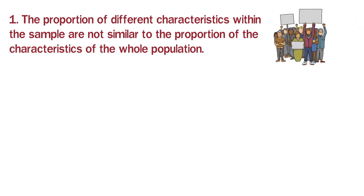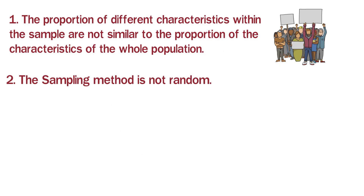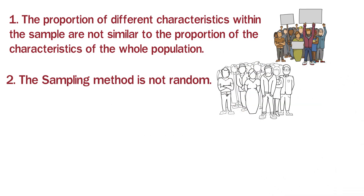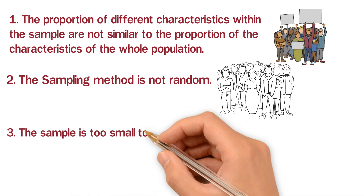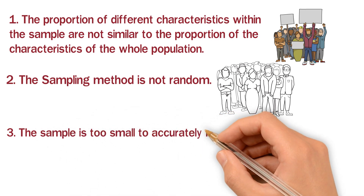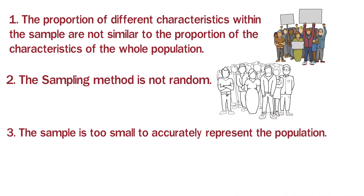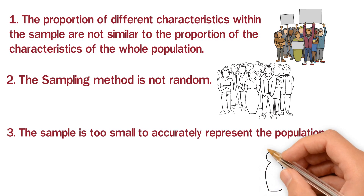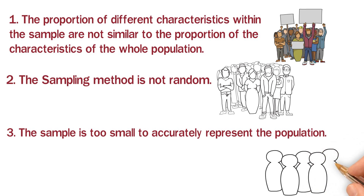The second reason is that the sampling method is not random. And the third reason is that the sample is too small to accurately represent the population. For example, if you have a population of 10,000 and you only make a sample of 10 people, then if you have such a small sample that you can't represent the whole population, you have higher chances of error.